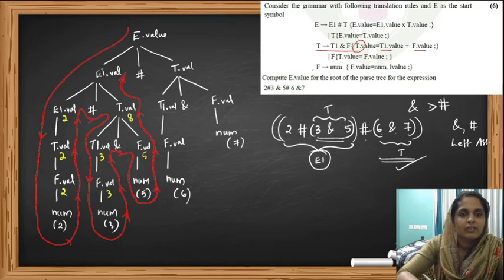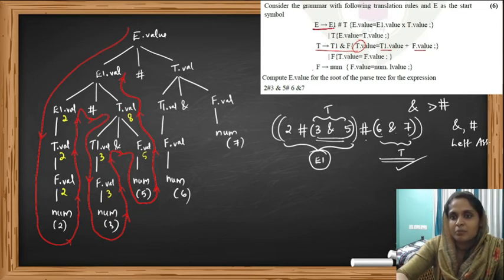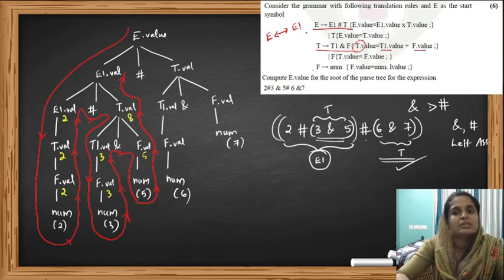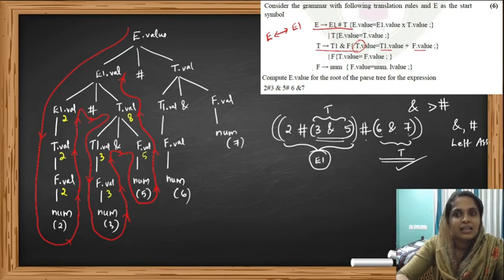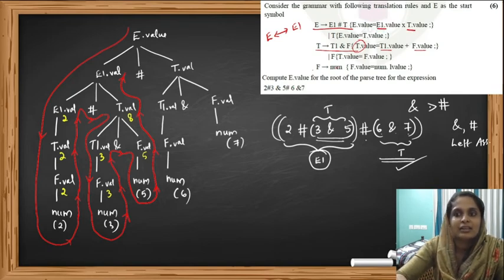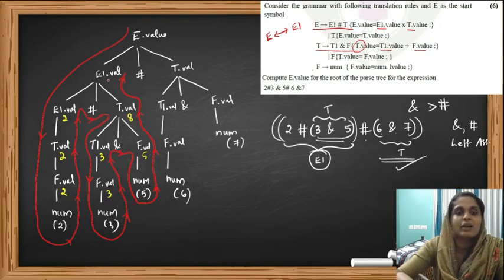We now have completed the reduction E produces E1 hash T. The translation rule multiplies E1 dot value and T dot value. E1 dot value is 2 and T dot value is 8, so 2 multiplied by 8 equals 16. That result 16 is stored in this E dot value.